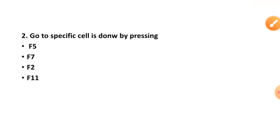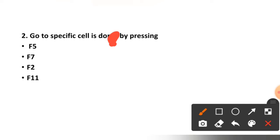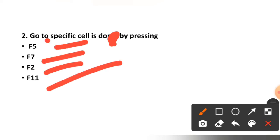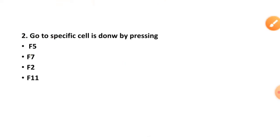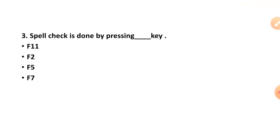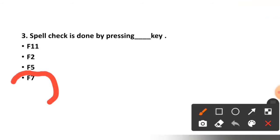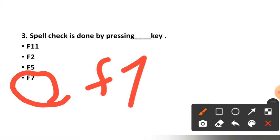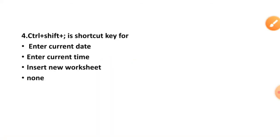Question number two: go to specific cell is done by pressing which key? F5, F7, F2, or F11? The correct option is option number one, F5. Question number three: spell check is done by pressing which key? F11, F2, F5, or F7? The correct option is option D, F7.